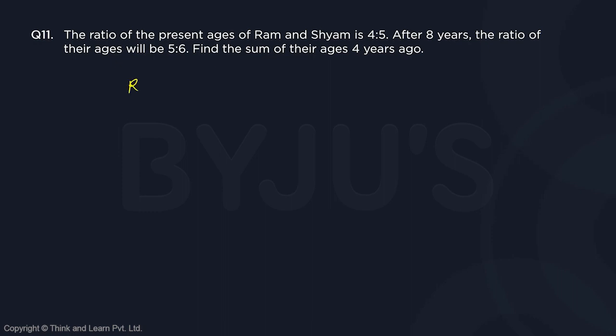The ratio of the present ages of Ram and Shyam, so Ram by Shyam is 4 to 5. So this is 4x and 5x, I'm writing the actual ages. After 8 years, the ratio of the ages will be 5 to 6, so after 8 years...